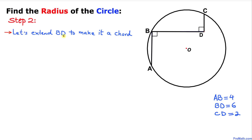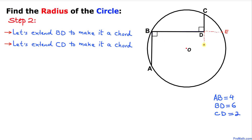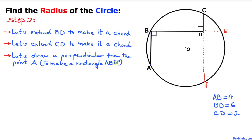Here is our next step: let's extend BD to make it a chord. We are going to extend BD to a point on the circle which I'll call point E. Likewise, we are going to extend CD to make it a chord as well, extending it to a point I'll call point F. Let's also draw a perpendicular from point A onto this chord, calling that point P. As we can see, A, B, D, P is going to become a rectangle, and this angle is 90 degrees.